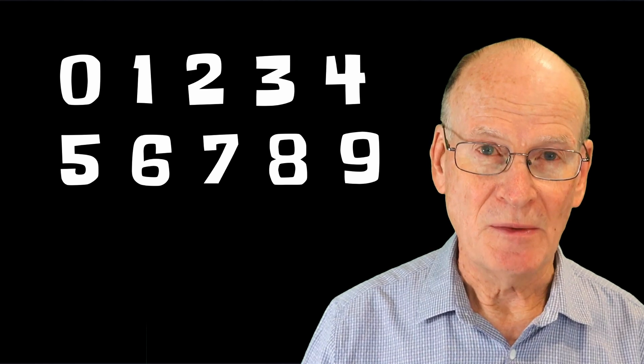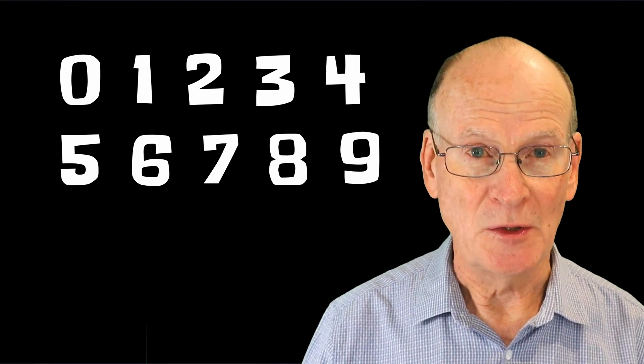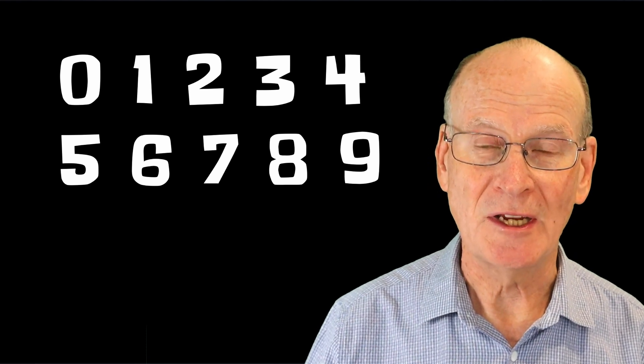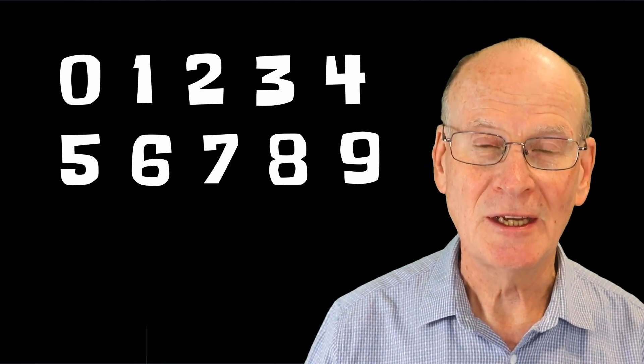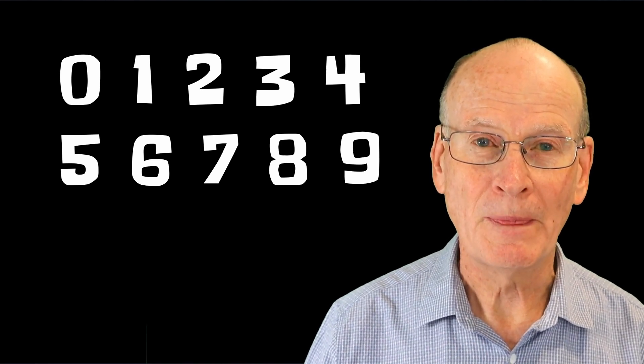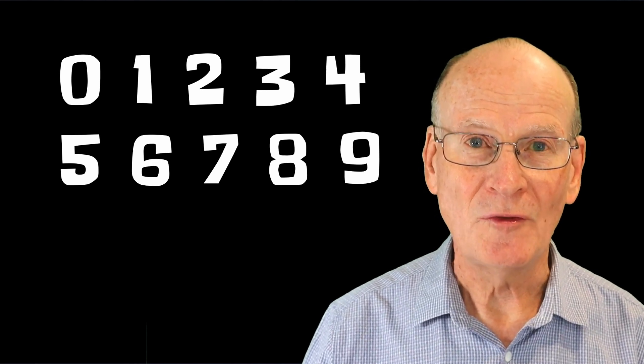Now the decimal number system uses 10 different symbols. And here they are: zero, one, two, three, four, five, six, seven, eight, nine. Everybody learns these as a young child. You learn to count with decimal, and these 10 different symbols allow 10 different values.